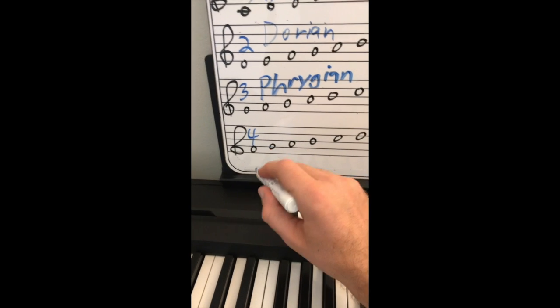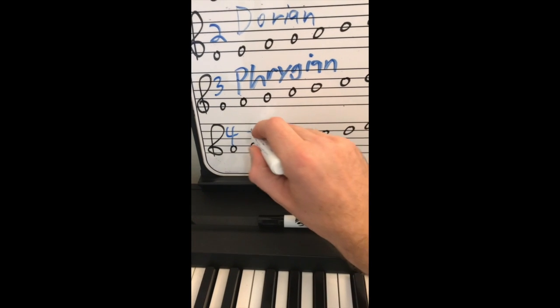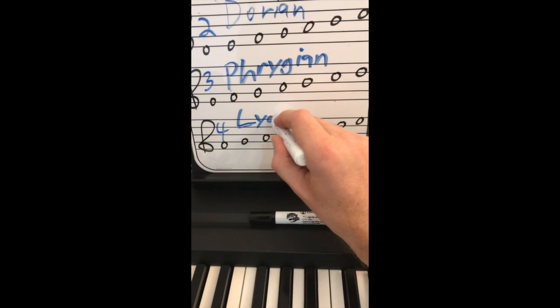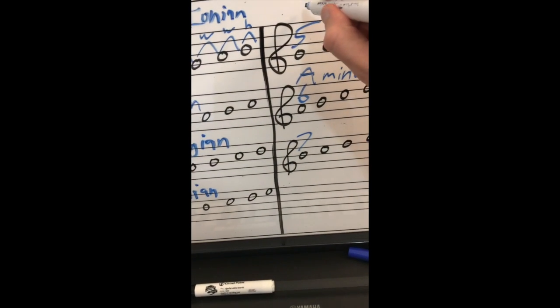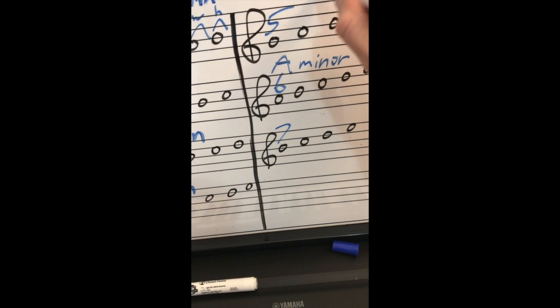Start on the fourth degree, it's called Lydian. When you start on the fifth degree, it's called Mixolydian.